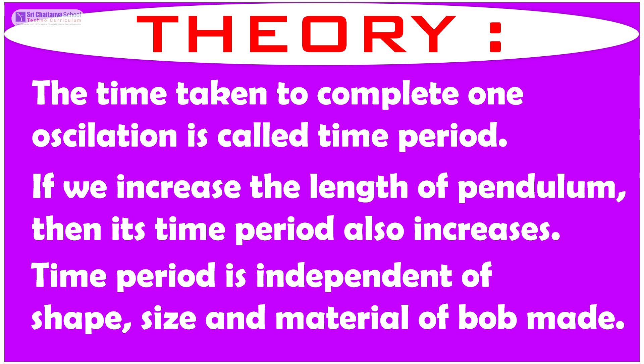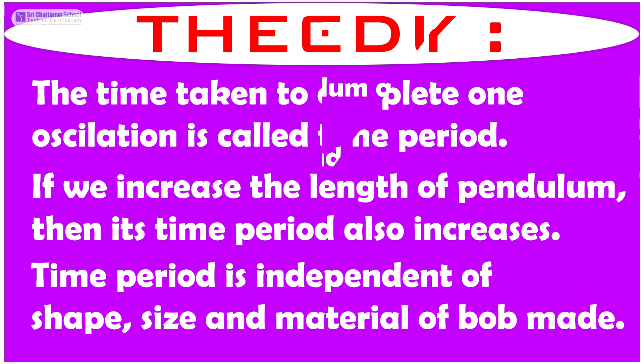The theory of this experiment is: the time taken to complete one oscillation is called time period. If we increase the length of the pendulum, then its time period also increases. Time period is independent of the shape, size, and material of the bob.